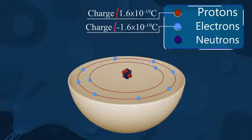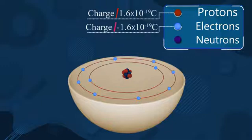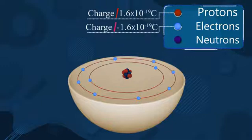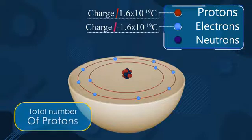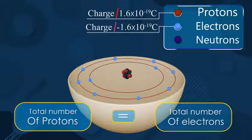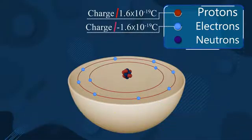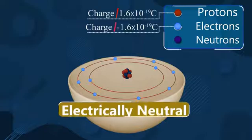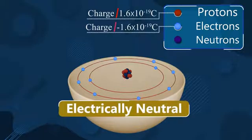So what do you observe? The charge of a proton is equal to the charge of an electron. And for any atom, the total number of protons and the total number of electrons are always the same. So we can say any atom at any point of time is electrically neutral.